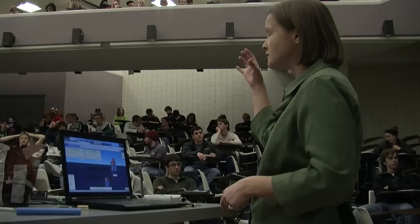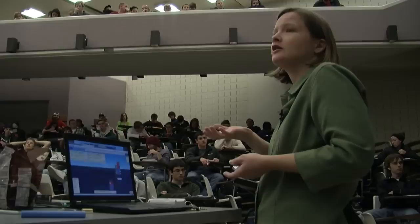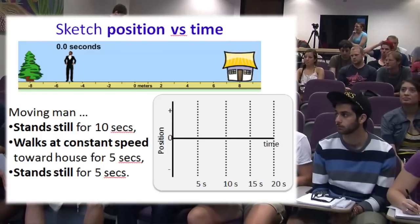For example, we've adapted one interactive lecture demonstration to use the moving man simulation. In this case, we give students a scenario. For instance, the man standing still for five seconds, then walking at a constant speed for ten seconds, and then standing still for another five seconds. We ask them to predict how the velocity versus time and position versus time graphs are going to look.